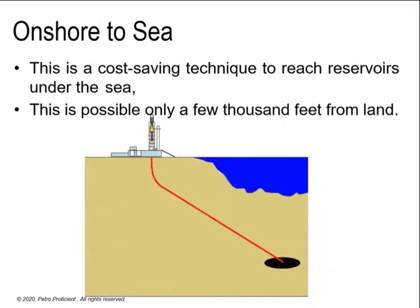Onshore to sea: sometimes if it is not possible to get an offshore rig, or it is easier to drill from onshore, this is considered a cost-saving technique. You locate your rig on an onshore location near the sea and then drill a deviated well. There are numerous cases like this where we drill from an onshore location.